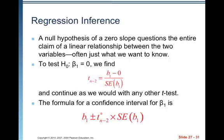A null hypothesis of zero slope questions the entire claim of a linear relationship between the two variables, often just what we want to know. So this is called a linear regression T test. So if you're told to test the linearity, this is the test you want to do, or if you're told to do a linear regression T test. So your null hypothesis is going to be beta one equals zero,